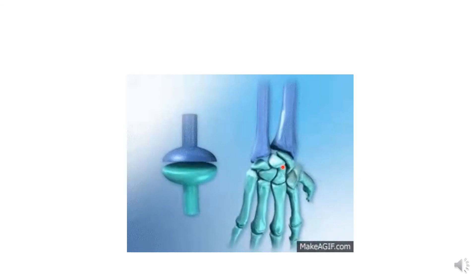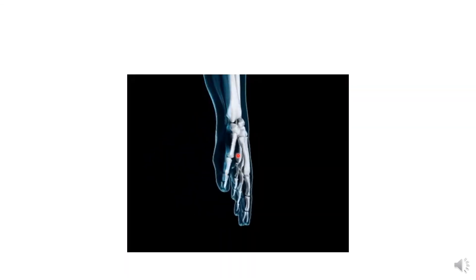Here is shown the radiocarpal and ulnocarpal regions. The head of the ulna is separated by the articular disc from the triquetrum; the radius articulates with the scaphoid and lunate. The triquetrum is separated from the inferior surface of the head of the ulna by the articular disc. The oval-shaped concavity fits into the oval-shaped convexity — this is the styloid process of the radius with the scaphoid bone in normal position.